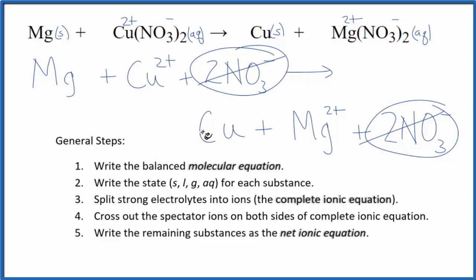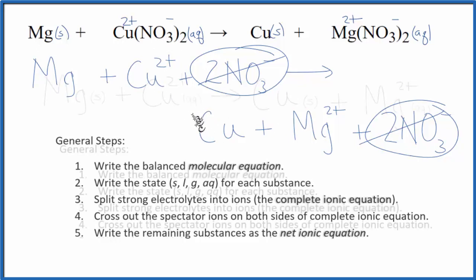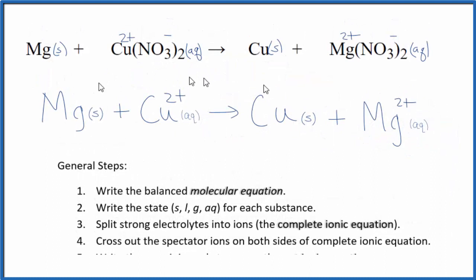I'll clean it up and add the states. We'll have our net ionic equation. And this is the balanced net ionic equation for Mg plus Cu(II) nitrate. You'll notice charge is conserved. We have a 2 plus on this side, and a 2 plus on this side. Mass is also conserved. We have a magnesium atom on both sides, and a copper atom on both sides.